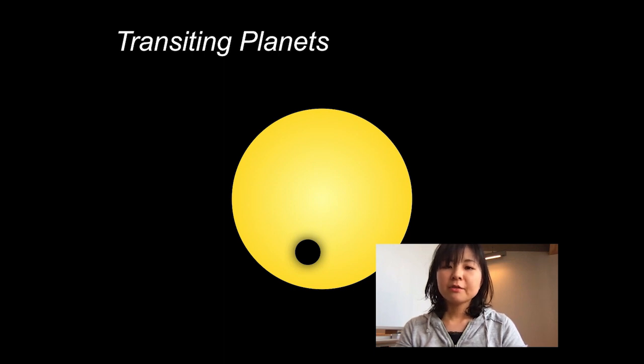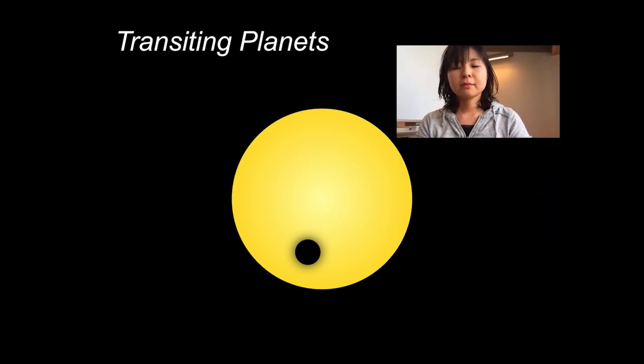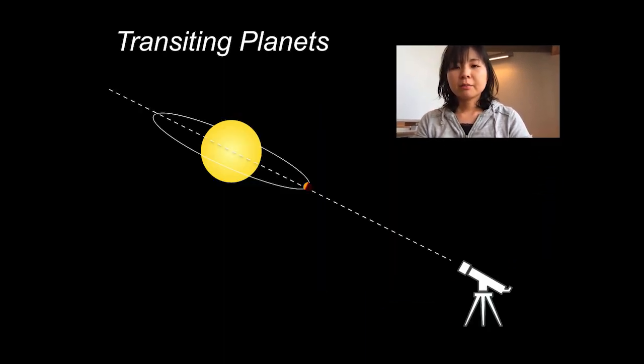Meanwhile, the discovery of transiting planets opened up new possibilities to study exoplanet atmospheres without using the special instruments. A transiting planet is a planet which passes right in front of the star because its orbital plane is close to the line of sight.